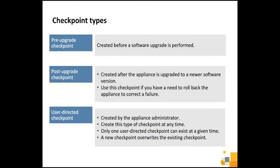There are three types of checkpoints. The first type is a pre-upgrade checkpoint, which is created before a software upgrade is performed. The second type is a post-upgrade checkpoint, which is created after you have upgraded your appliance to a newer software version. You may use this checkpoint if you have a need to roll back your appliance to correct a failure.